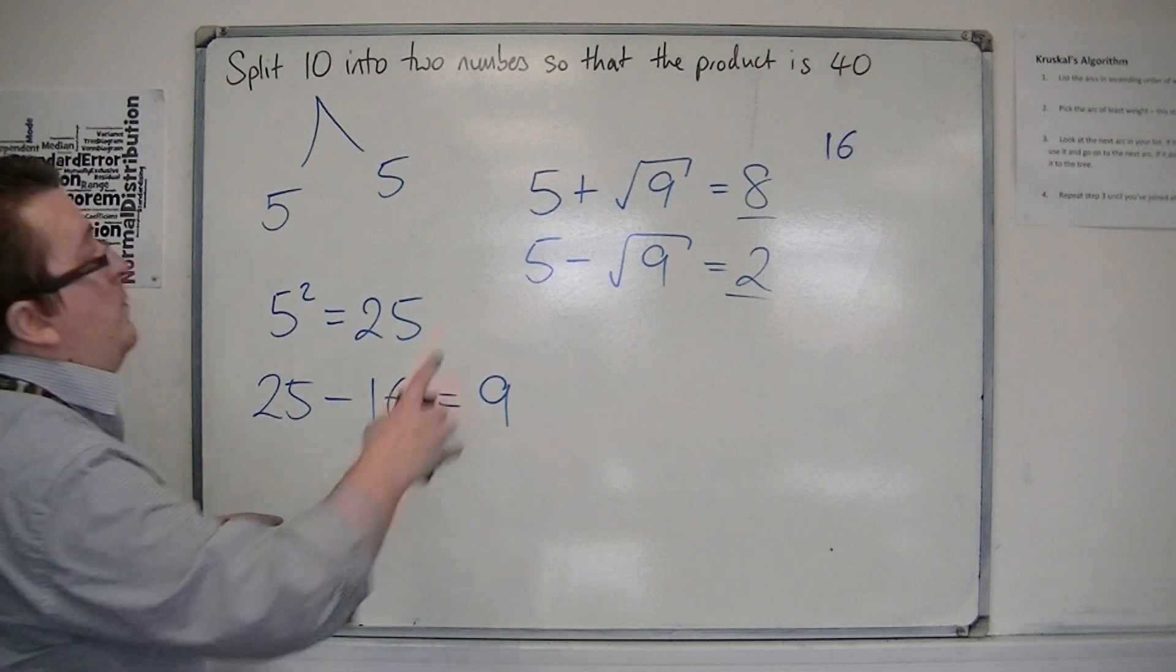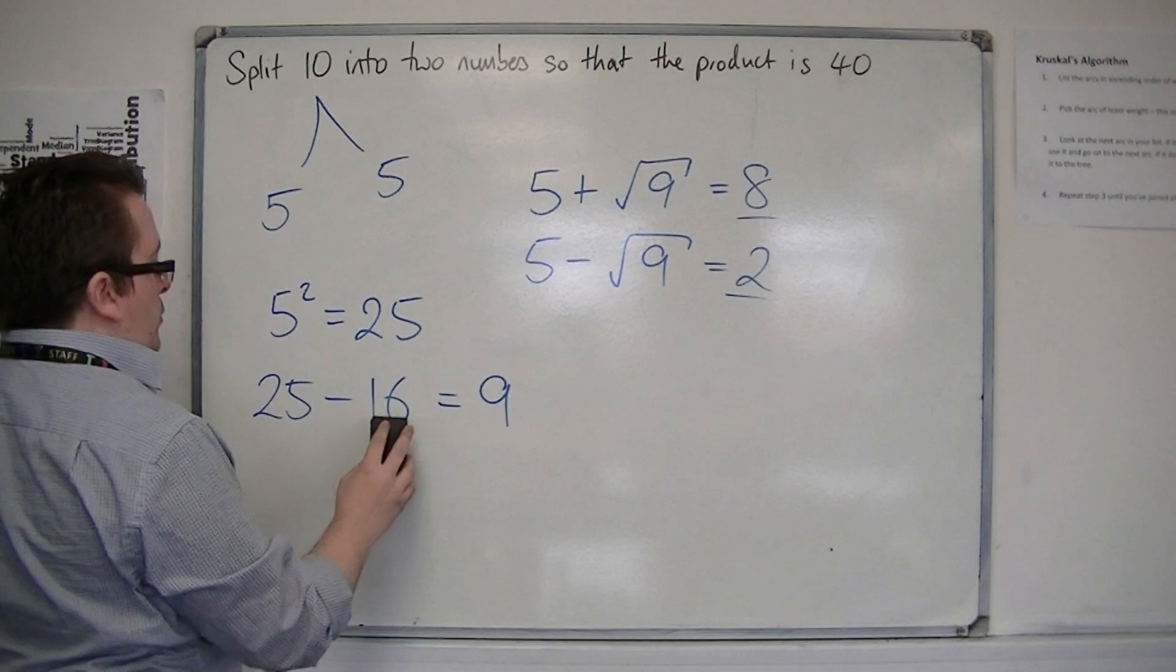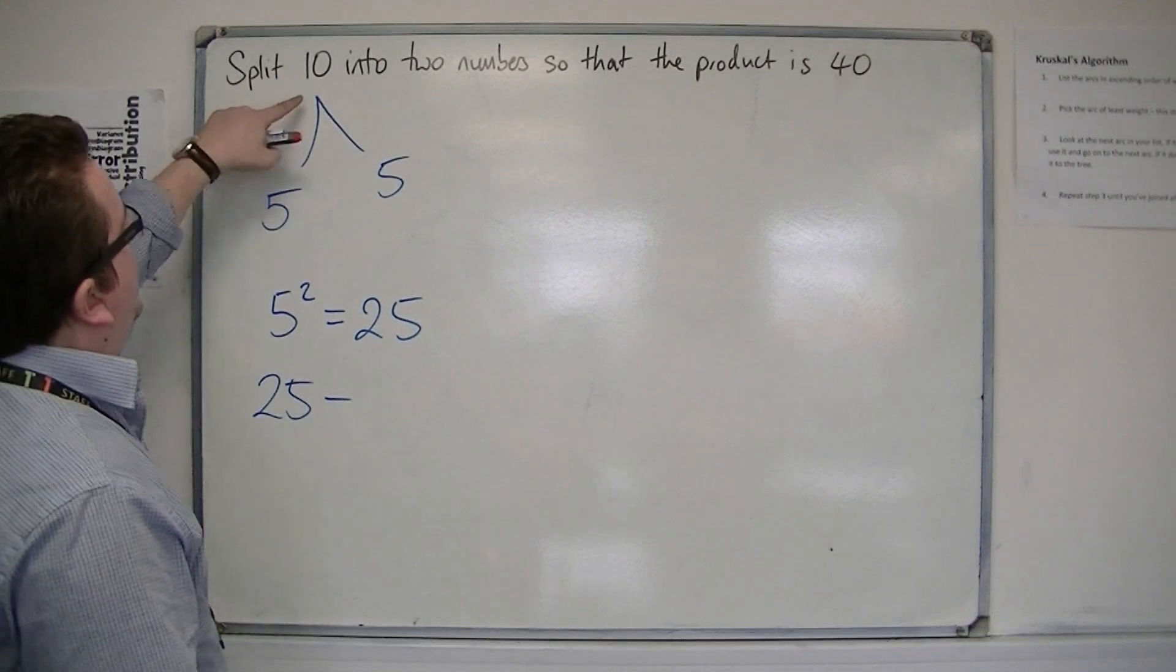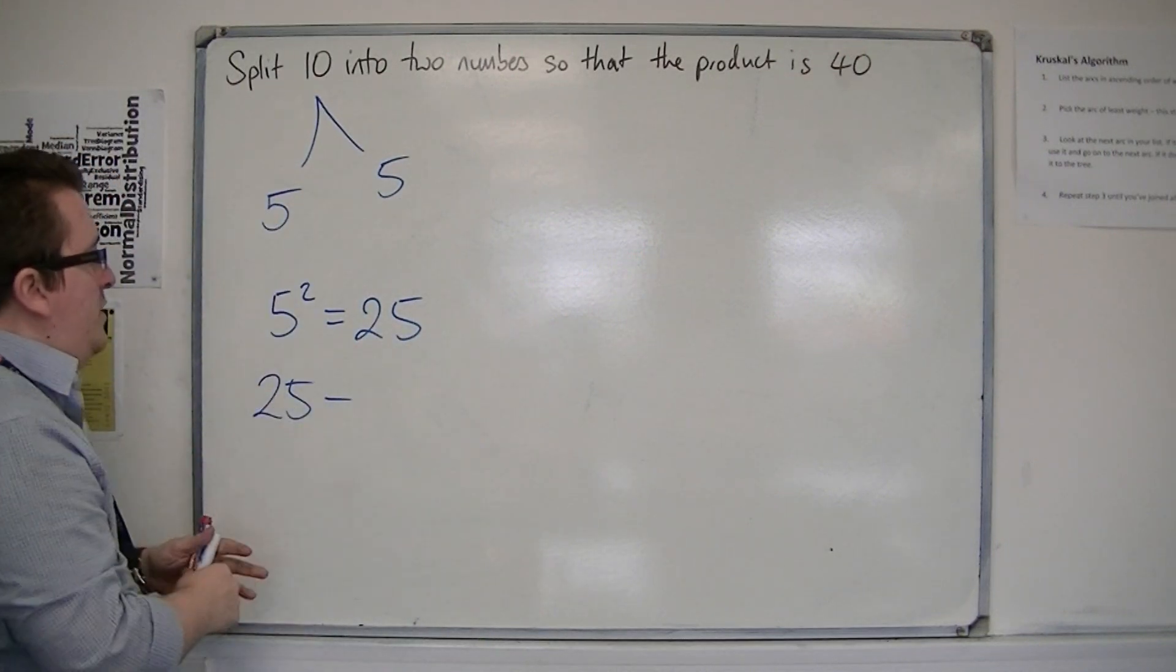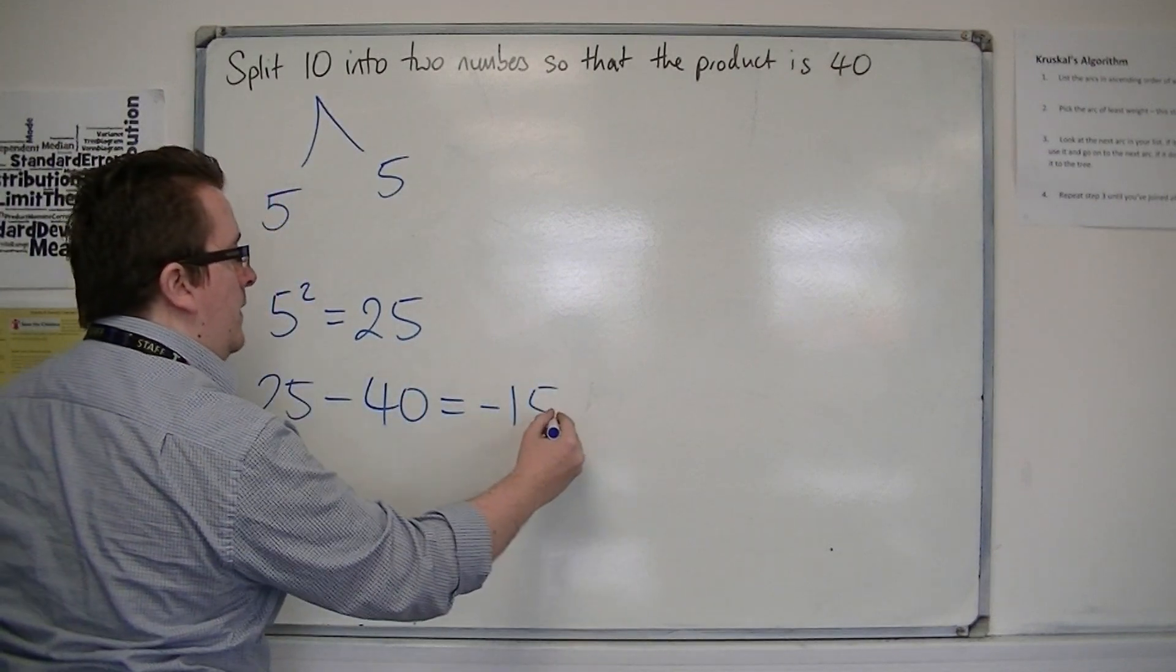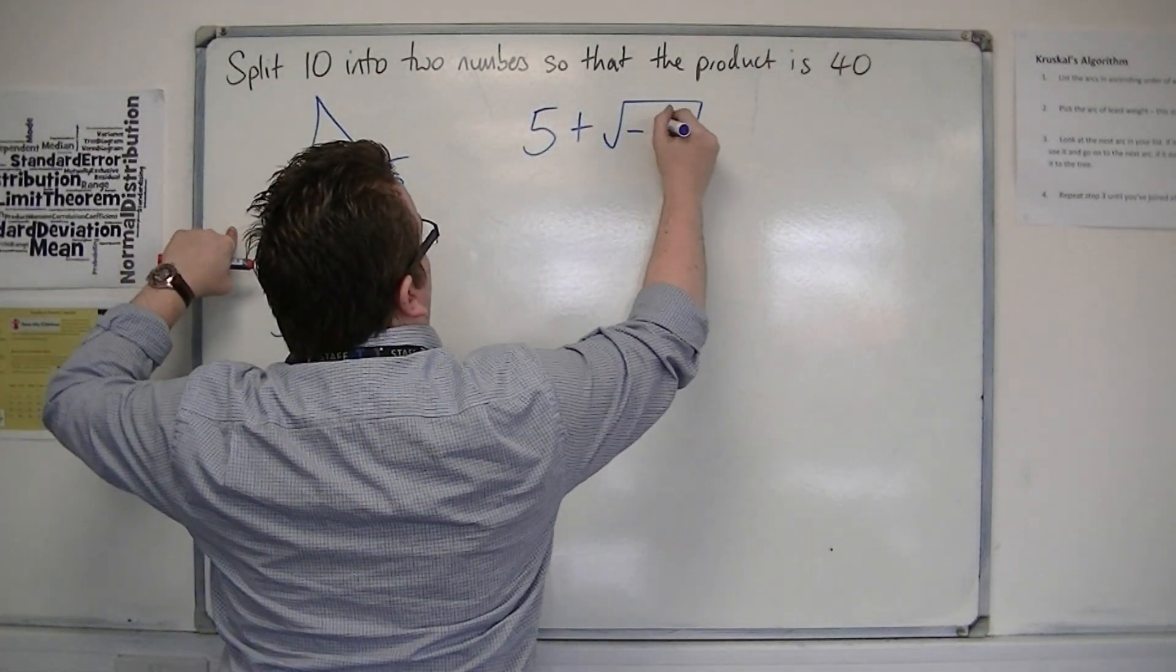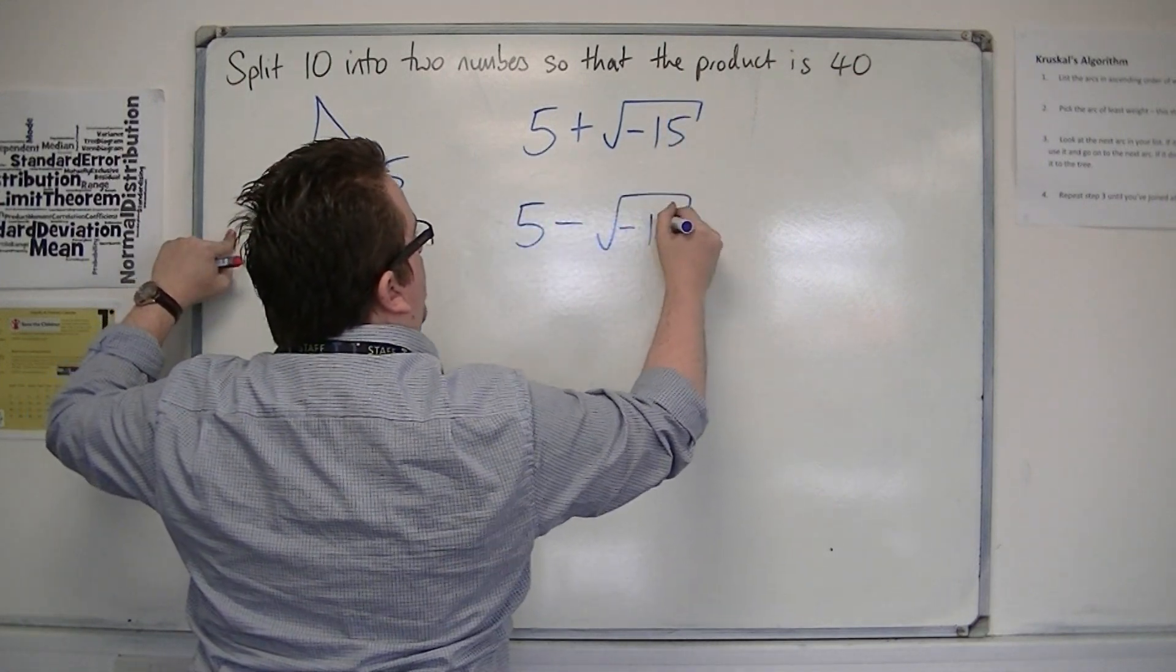So let's go back to our original problem, 40. If it's 40, then we still remain splitting 10 into two parts, 5 and 5. If we square 5, we get 25. And then we do 25 take away 40. Well, that gets me minus 15. So that would mean that my two numbers are 5 plus root minus 15 and 5 minus root minus 15. So they would be the two numbers that I'm looking for.